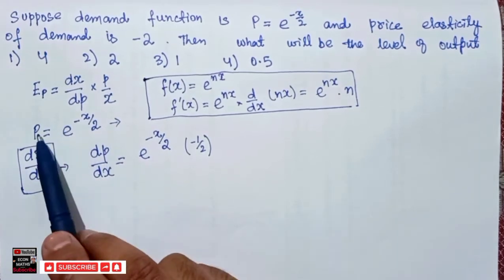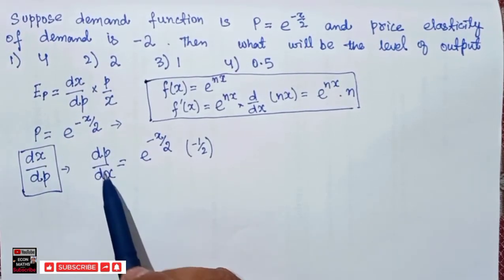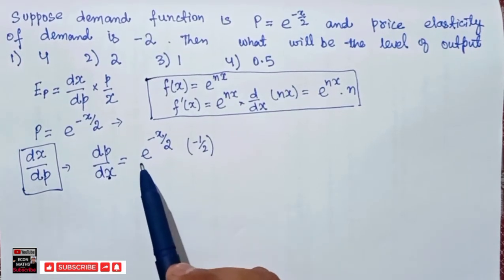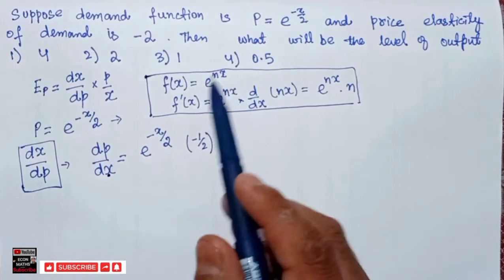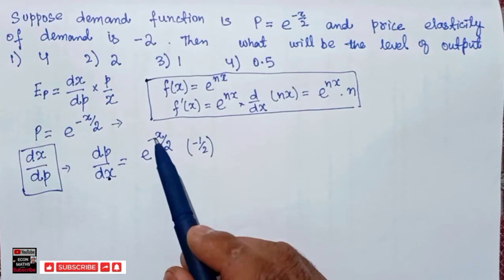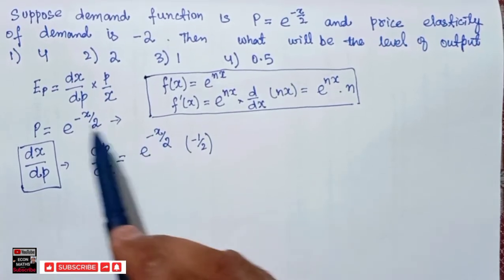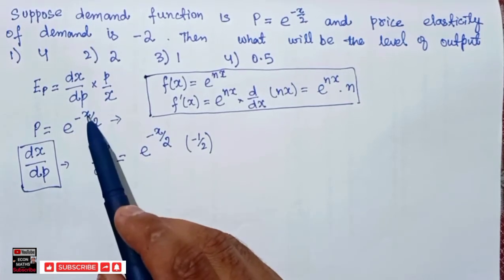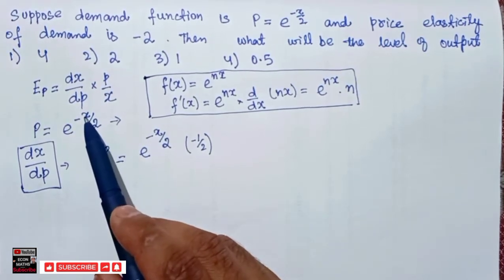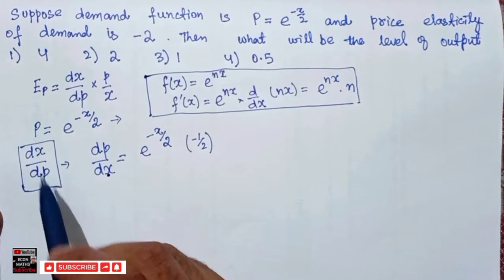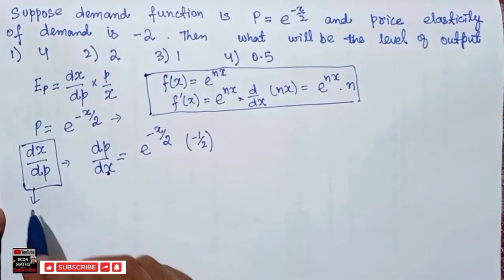So we differentiate the inverse demand function with respect to x. dp divided by dx is equal to e to the power minus x divided by 2 as it is, multiplied by the derivative of the exponent minus x divided by 2. The derivative of minus x is minus 1, so this becomes minus 1 by 2. Now we need to find dx divided by dp.